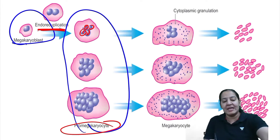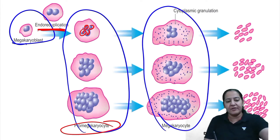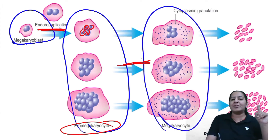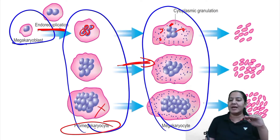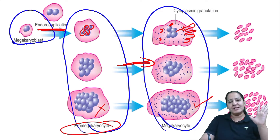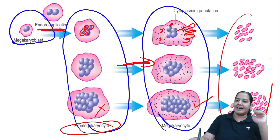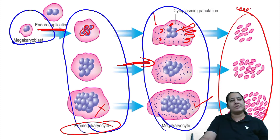Promegakaryocyte gives rise to megakaryocyte. The difference between them is in the cytoplasmic granularity. In promegakaryocyte, the cytoplasm is non-granular, but in megakaryocyte, the cytoplasm contains pink-purple granules. Ultimately, from the megakaryocyte, multiple pseudopods are formed, they degrade, and multiple platelets are formed. From one megakaryocyte, nearly 4,000 platelets are formed.